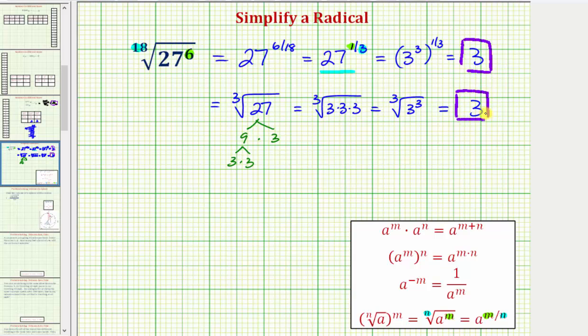Now let's take a look at this one more time using a slightly different approach. So beginning with the 18th root of 27 to the 6th, let's say we do recognize right away that 27 is a perfect cube. We could rewrite this as the 18th root of 3 to the 3rd raised to the 6th. And in this form, the radicand is 3 to the 3rd raised to the 6th.